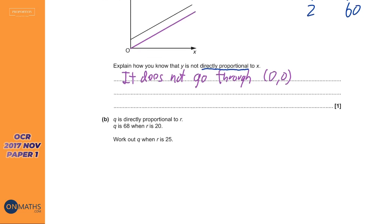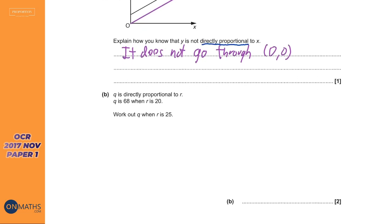Right. Next bit, it says Q is directly proportional to R. Now what that means is as Q doubles, R will double as Q halves, R will half. And then it gives us a value of Q and R. So I'm going to write this out just as I've done it before. I'm going to have R on the left hand side and Q on the right hand side. It doesn't really matter which way around you put them. And so it says when R is 20, then Q is 68. Find out what Q is when R is 25.